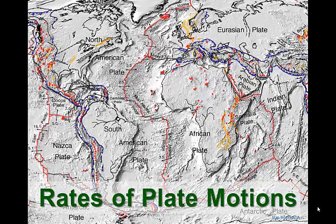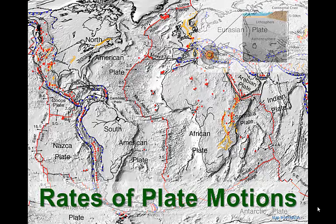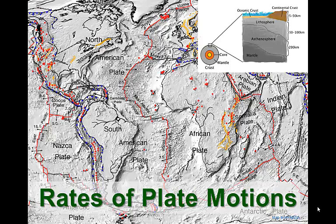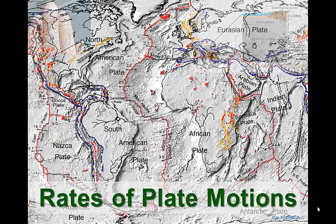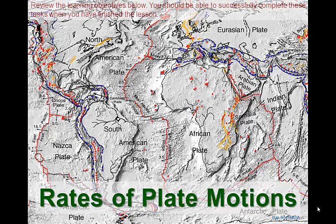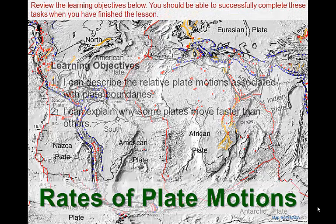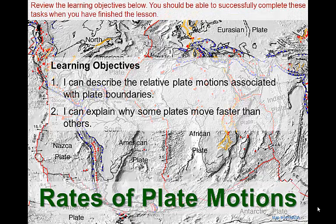It seems a bit odd, but the tectonic plates that cover huge areas of Earth's surface have something in common with your fingernails. Our nails grow at an average rate of about 3 cm a year, and the tectonic plates move at about the same rate, essentially traveling a few centimeters across Earth's surface every year. In this lesson, we will describe the relative motions of plates along different types of plate boundaries, and we will explain why we have fast and slow plates.